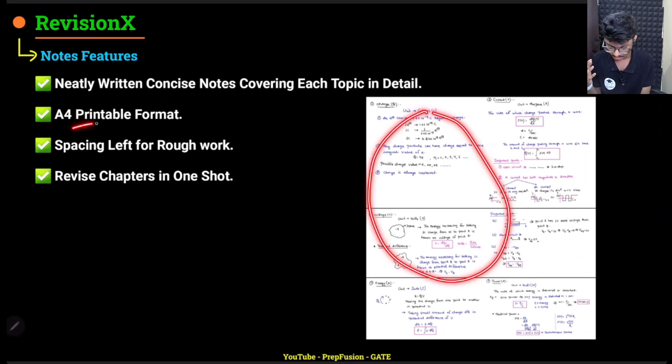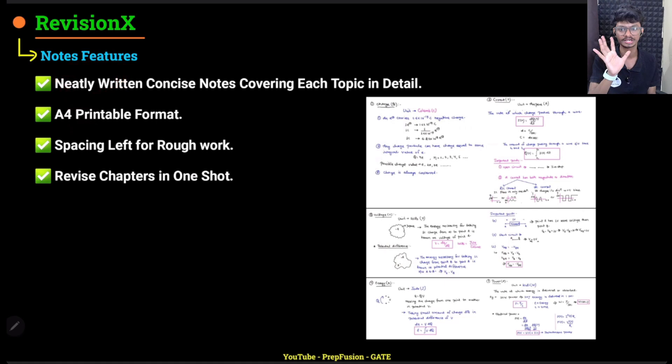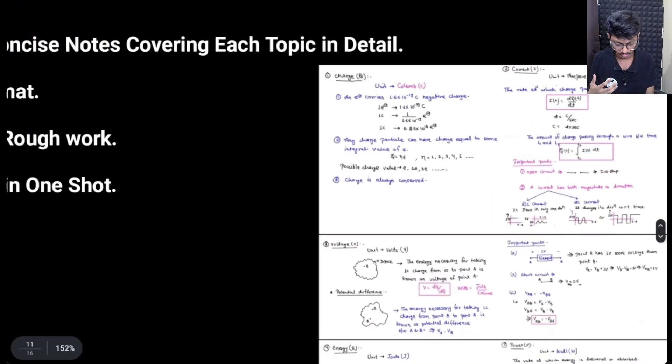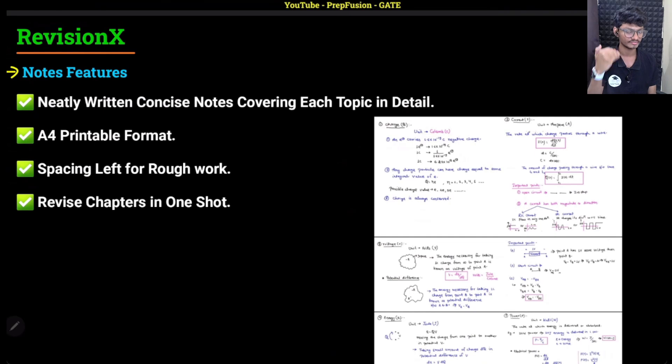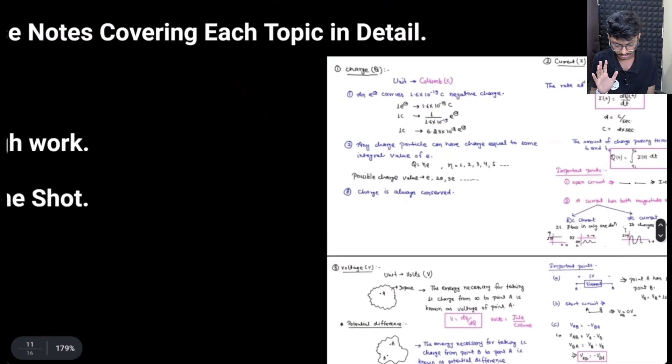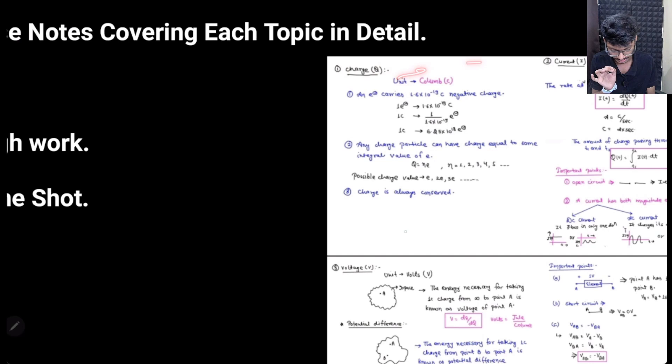Each page in these notes will be in A4 printable format so that you can take the printout of these notes and keep it with you in hard copy. Also, you can scribble on the notes and write your own version. Of course we will cover everything. Every single topic will be covered in the notes. But let's say you want to write an additional information with that, you can write that in the space provided.